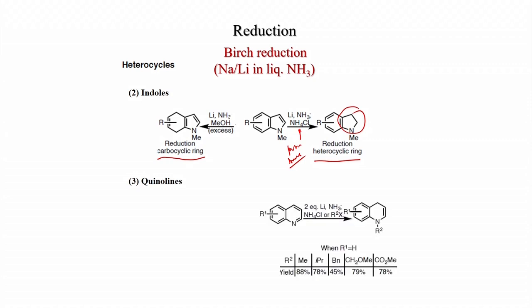Quinolines can also be treated under Birch conditions. With two equivalents of lithium in liquid ammonia followed by ammonium chloride or R2X, N-alkylation occurs and the heterocyclic ring is reduced, leaving only one double bond in an enamine-type system. For R1 = H (quinoline), iodomethane gives 88% yield; isopropyl 78%; benzyl 45%; CH2OMe 79%; CO2Me 78%. N-alkylation is occurring.